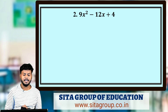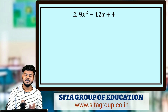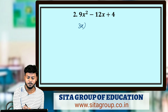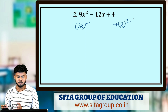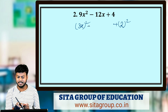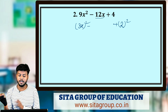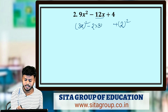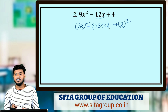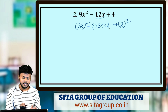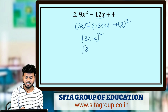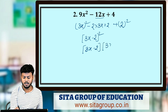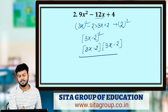Similarly, we solve the second question: 9x² - 12x + 4. Now 9x² can be written as (3x)², and 4 can be written as 2². And 12x can be written as 2 × 3x × 2, which is 2ab. This matches the formula a² - 2ab + b² = (a - b)². So with a = 3x and b = 2, the answer is (3x - 2)², or (3x - 2)(3x - 2). This is your answer.